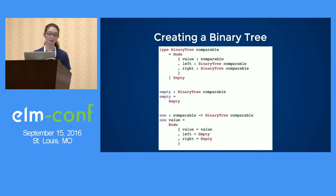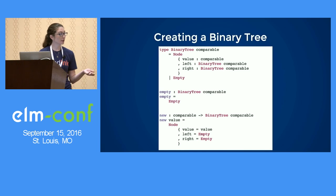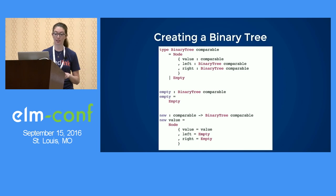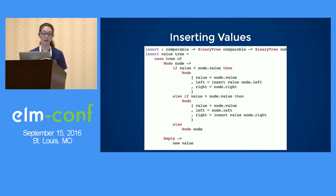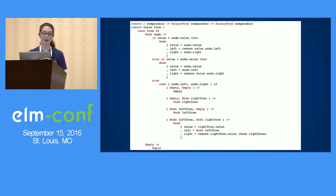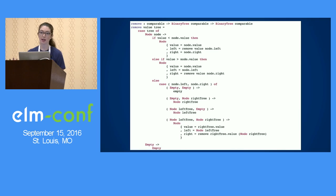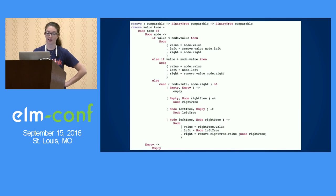When we create the tree, this isn't too bad — we can easily create a binary tree with a value or just an empty binary tree. When we insert values, this is also relatively clean and easy to follow. And then when we remove values, we can explicitly handle removing a node without children, with one child, or with both children. I skipped covering remove for the array-based implementation on purpose, because this is much better.